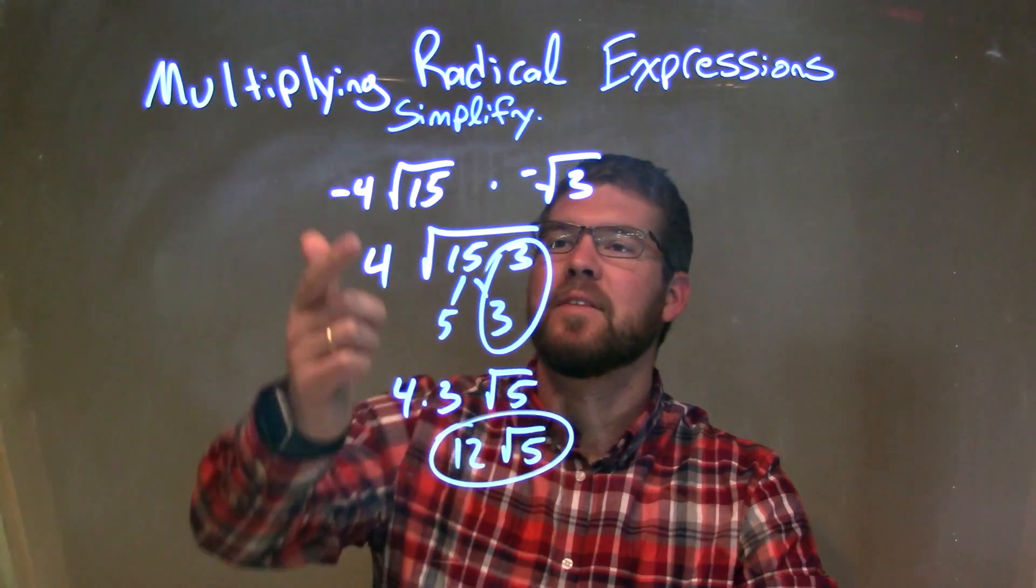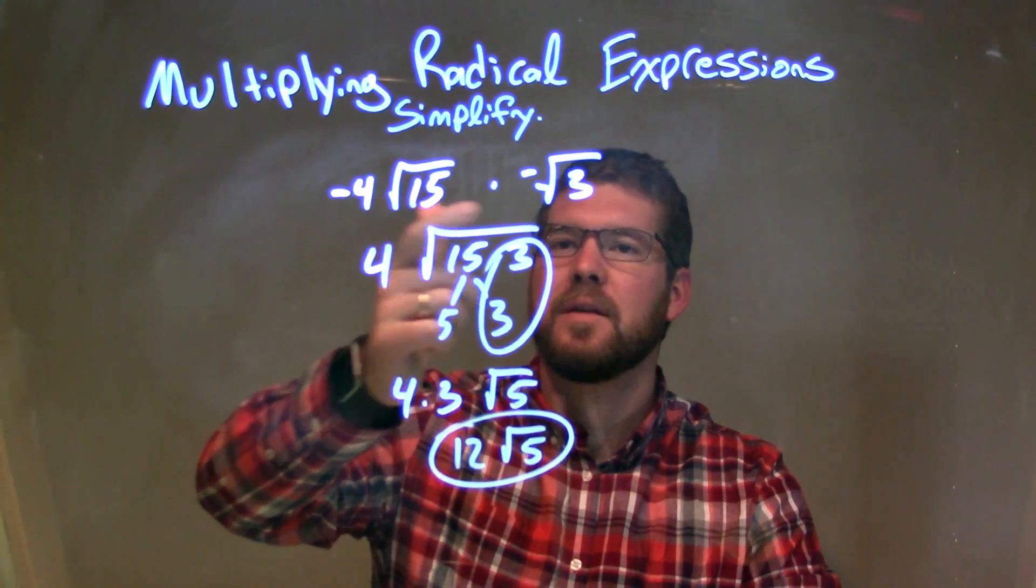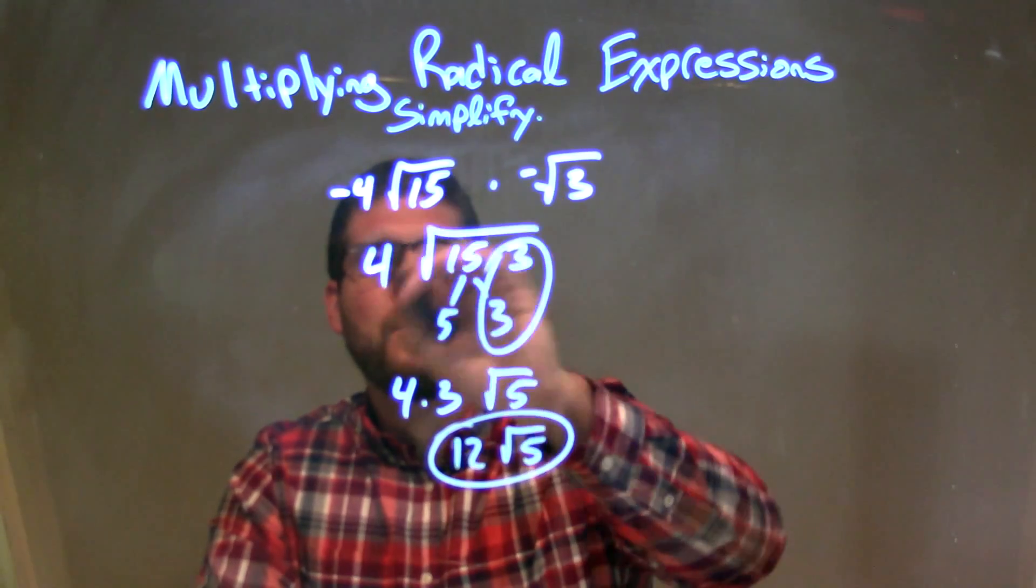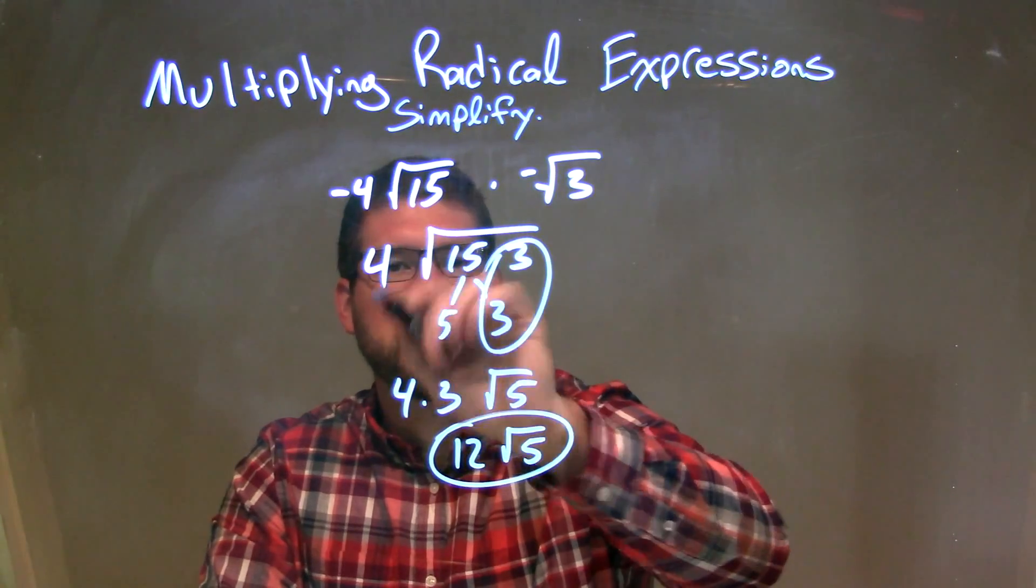So let's recap. We're given negative 4 times the square root of 15 times the negative square root of 3. Well, the two negatives cancel out. You multiply here. Cancel out. The 4 just comes out front.